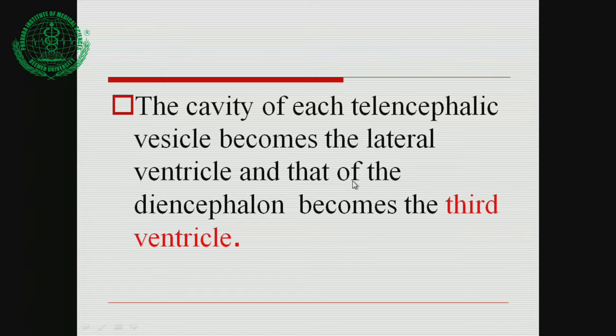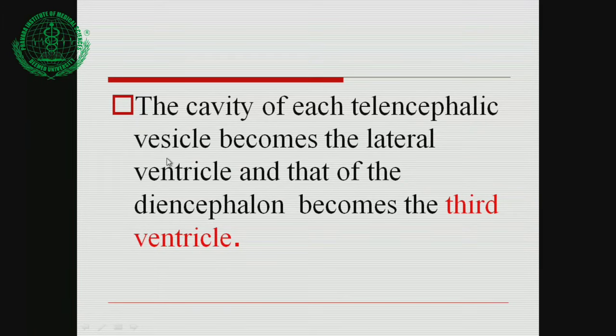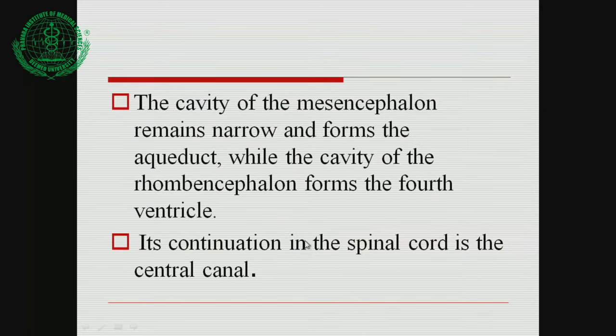The cavity of each telencephalic vesicle becomes the lateral ventricle. The cavity of the diencephalon becomes the third ventricle. The cavity of the mesencephalon remains narrow and forms the cerebral aqueduct. The rhombencephalon forms the fourth ventricle. The continuation in the spinal cord is the central canal.